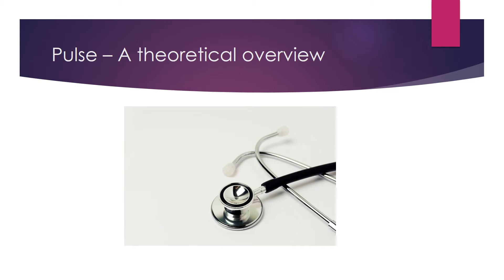The normal adult pulse rate ranges between 60 and 100 beats per minute. The site most commonly used for taking pulse is the radial artery, found in the wrist, on the same side as the thumb.